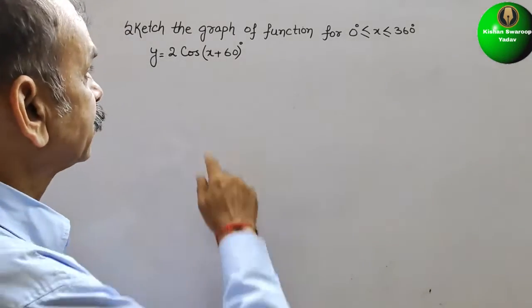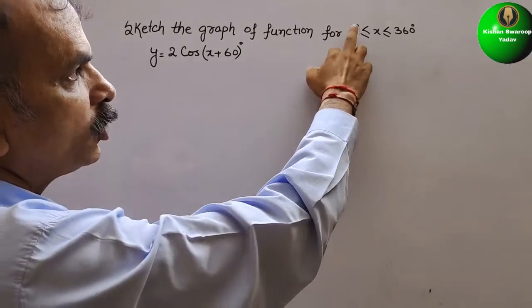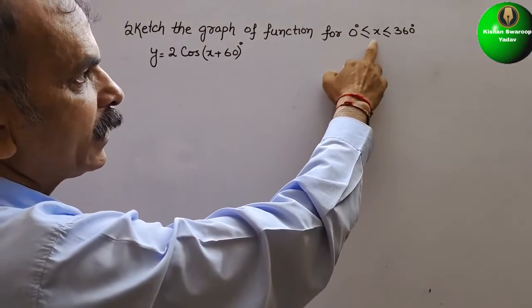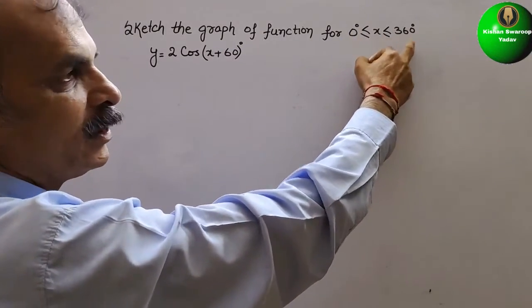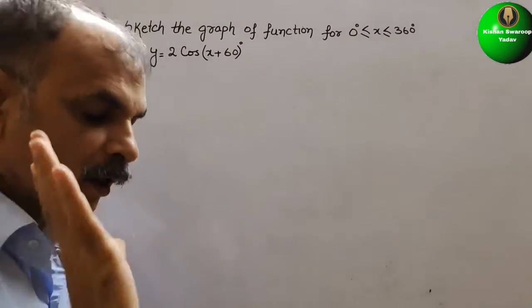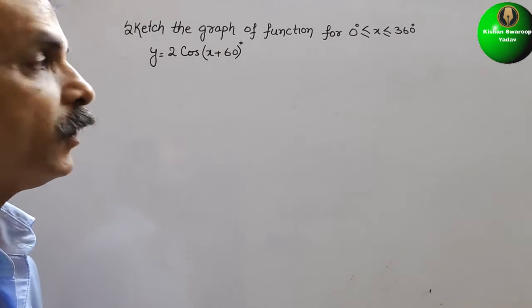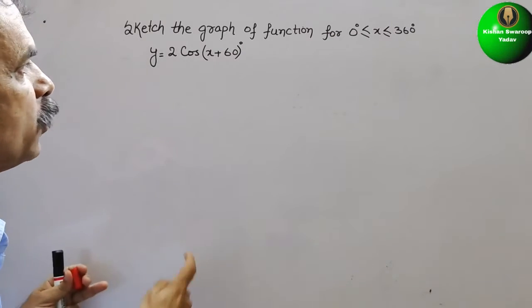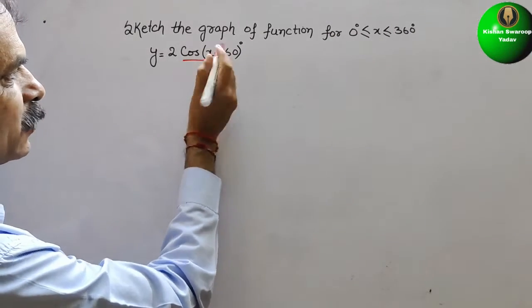Your question is: can we draw the graph of the function for 0° < x ≤ 360°? First, what we have to do — we have to construct cos x.